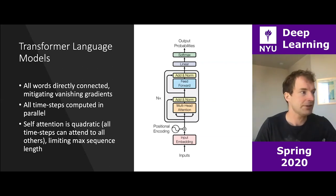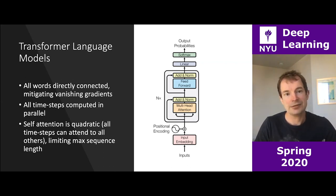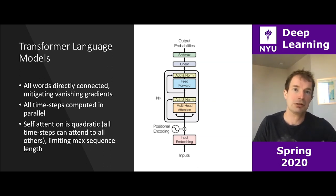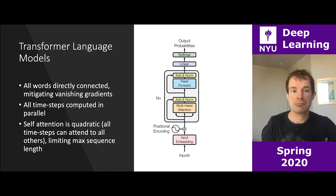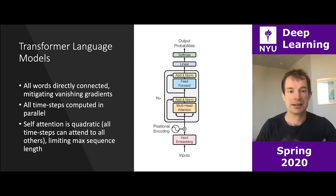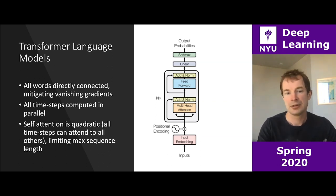Why are these models so good? The really powerful thing is that the model gives you direct connections between every pair of words — each word can directly attend to the hidden state of every previous word. In contrast, a convolutional model can only get to words within its receptive field, and a recurrent model has a bottleneck at each time step where state had to be compressed. With self-attention, you can in principle put a hundred percent attention on any word in the distant past and see exactly what was there — this avoids issues like vanishing gradients quite effectively.